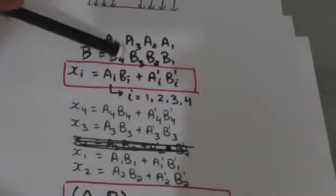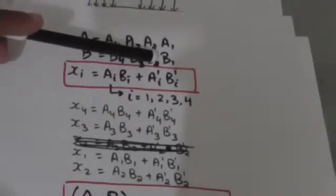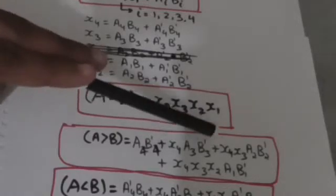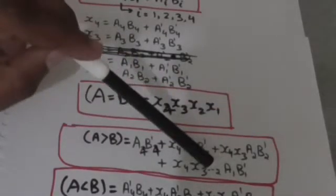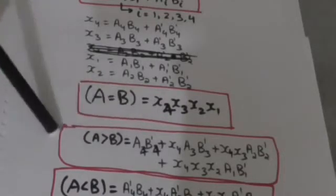When A4 equals B4, A3 equals B3, A2 equals B2, and A1 equals 1 and B1 equals 0, then A is greater than B — expressed as X4·X3·X2·A1·B1'. So the boolean function for output variable A greater than B is: A > B = A4·B4' + X4·A3·B3' + X4·X3·A2·B2' + X4·X3·X2·A1·B1'.